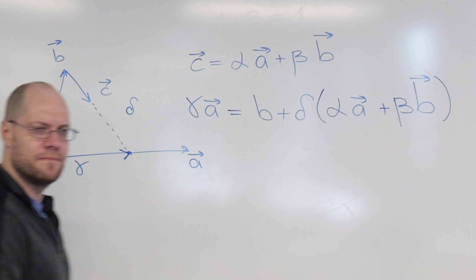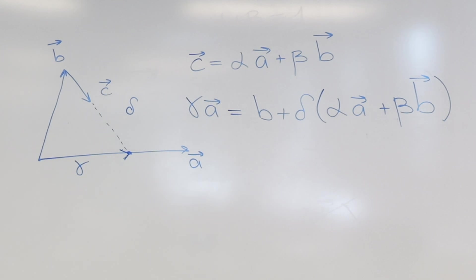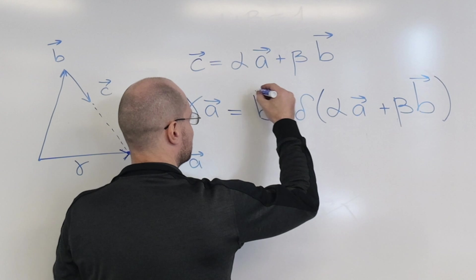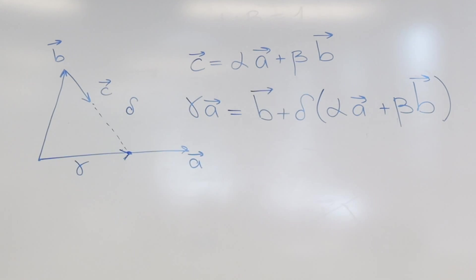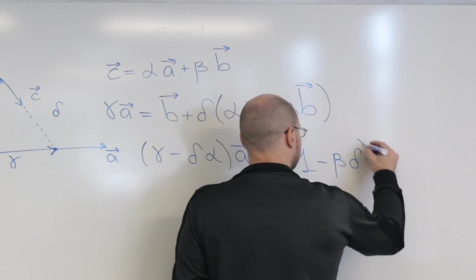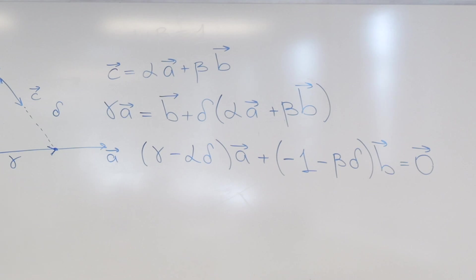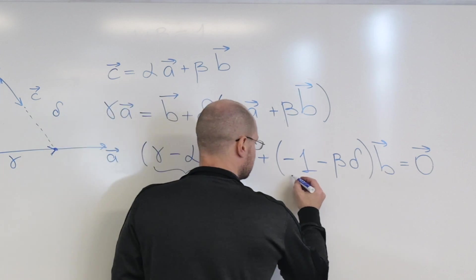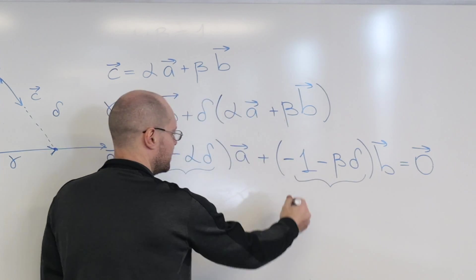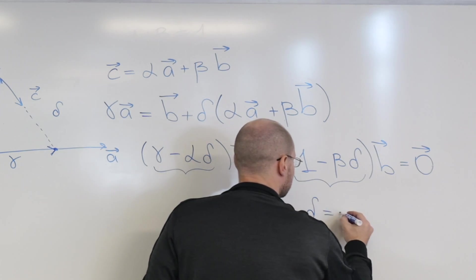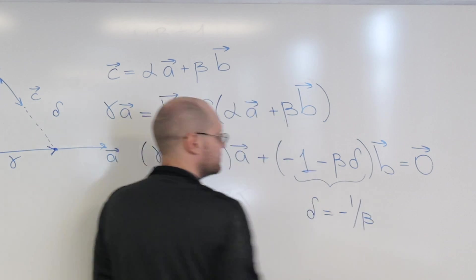And once again, this is where a student of linear algebra would say we're done. Because we have two equations and two unknowns. Our two unknowns are gamma and delta. And because this is a vector equation, it will give us two equations. So, so now this must equal zero. And this must equal zero. So from here, beta, I'm sorry, we're solving for delta. Delta equals minus one over beta. Am I right?